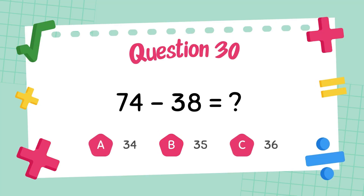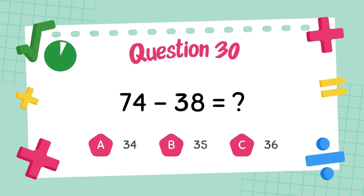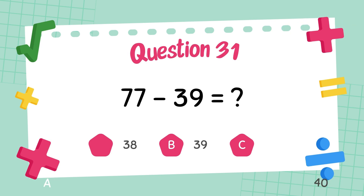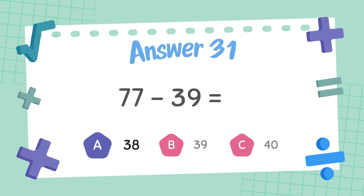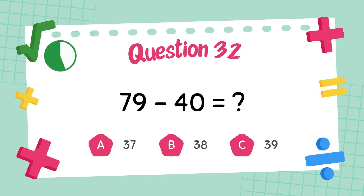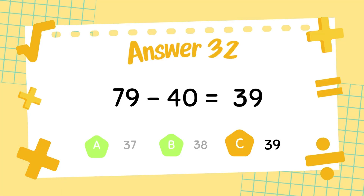What is 74 minus 38? The answer is 36. What is 77 minus 39? The answer is 38. What is 79 minus 40? The answer is 39.